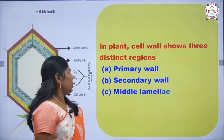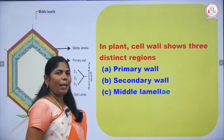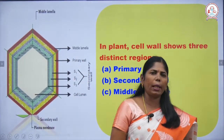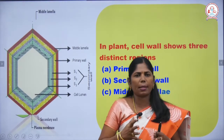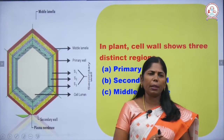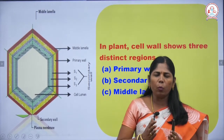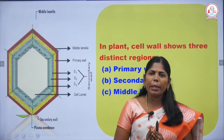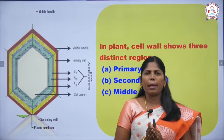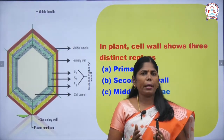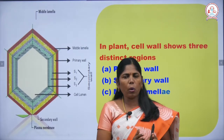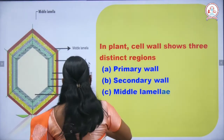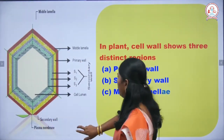What are the layers in the plant cell wall? The plant cell wall has three layers: the middle lamella, the primary wall next to the middle lamella, and the secondary wall next to the primary wall. You can see this very clearly in the picture.